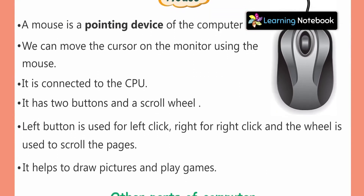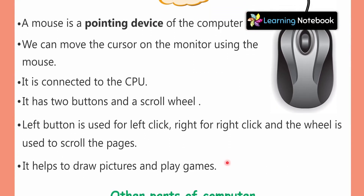We can move the cursor on the monitor using the mouse. A mouse is connected to the CPU with a wire. You can see the wire here, and this wire is connected to the CPU.